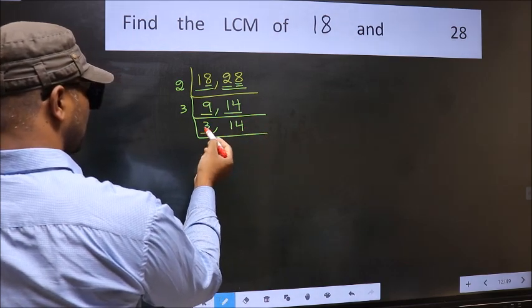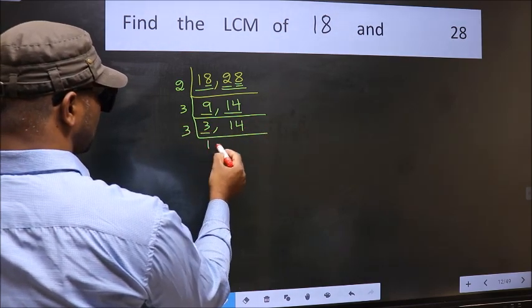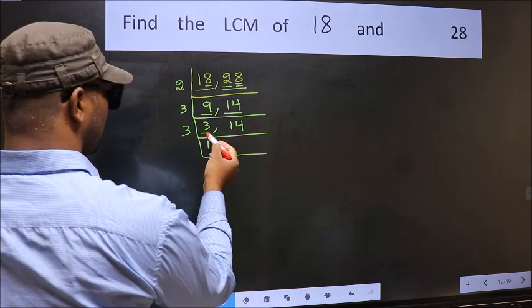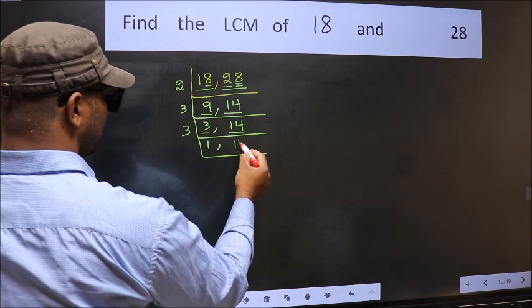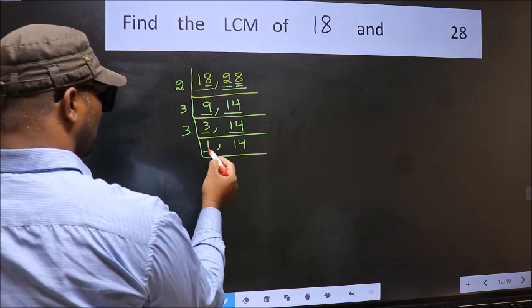Now here we have 3, 3 is a prime number. So 3 ones, 3. The other number 14, not divisible by 3. So we write it down as it is.